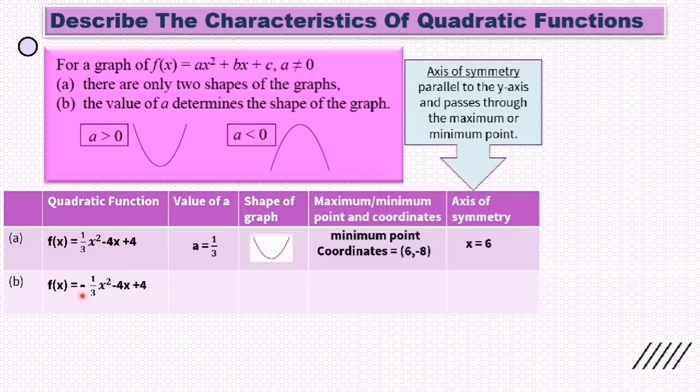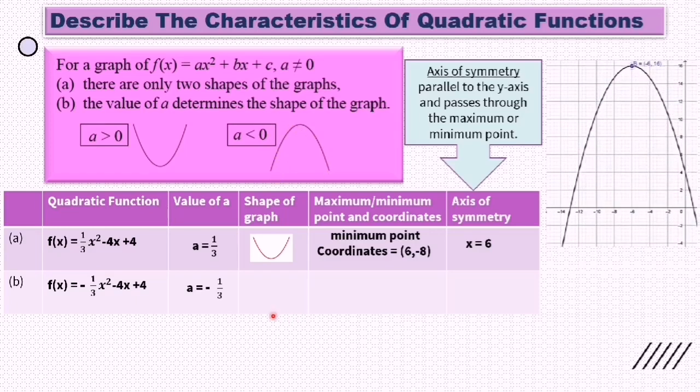For part (b), f(x) = -(1/3)x² - 4x + 4. Now a is negative, a = -1/3. So if a < 0 or negative, the graph will look like this. Now the point is at the top of the graph, so we call it the maximum point. The coordinate of the maximum point is (-6, 16).